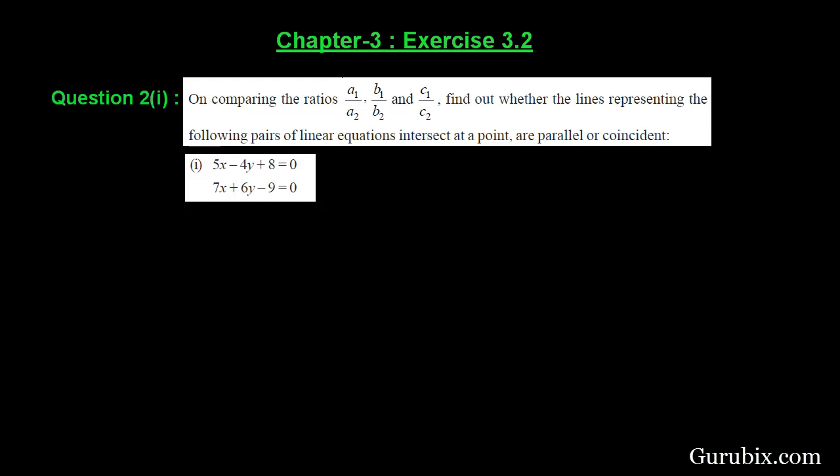Welcome friends, let us solve the first part of question number 2 of exercise 3.2 of chapter 3. The question is as follows: on comparing the ratios a1 over a2, b1 over b2, and c1 over c2, find out whether the lines representing the following pair of linear equations intersect at a point, are parallel, or coincident.